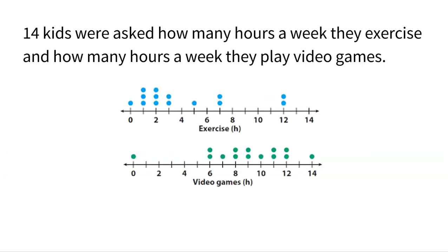So here we looked at 14 kids and every kid was asked two questions. How many hours a week do they exercise? And how many hours a week do they play video games? So on top, we see the blue dots. So again, got a number line. I actually went by ones, even though I didn't label the one and the three and the five, there's little marks there that represent them, even though I only labeled the 2, 4, 6, 8, 10, 12, 14.